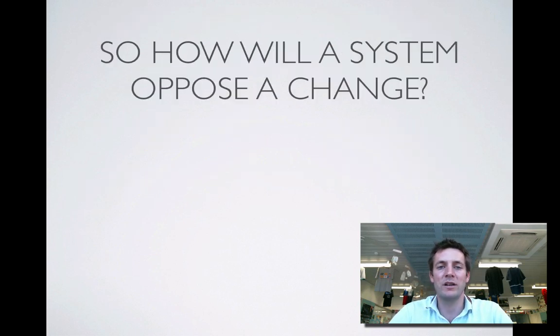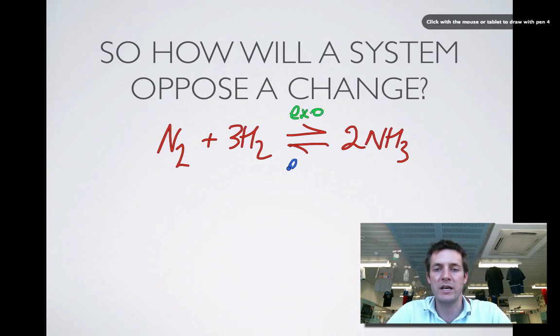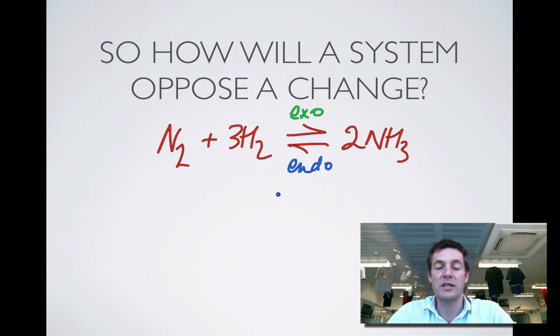So moving on finally to how will a system oppose a change. Let's just look at this example that we've just had where nitrogen and hydrogen are turning into ammonia. And we decided that the forward reaction was exothermic and the backward reaction was endothermic. Now remember, Le Chatelier's principle says that if we increase the temperature, the system will try to lower it because it is trying to reduce the effect of any change that we've imposed. Or in other words, it's trying to minimize any change that we've put upon the system. So if I raise the temperature, the system will try to lower it.